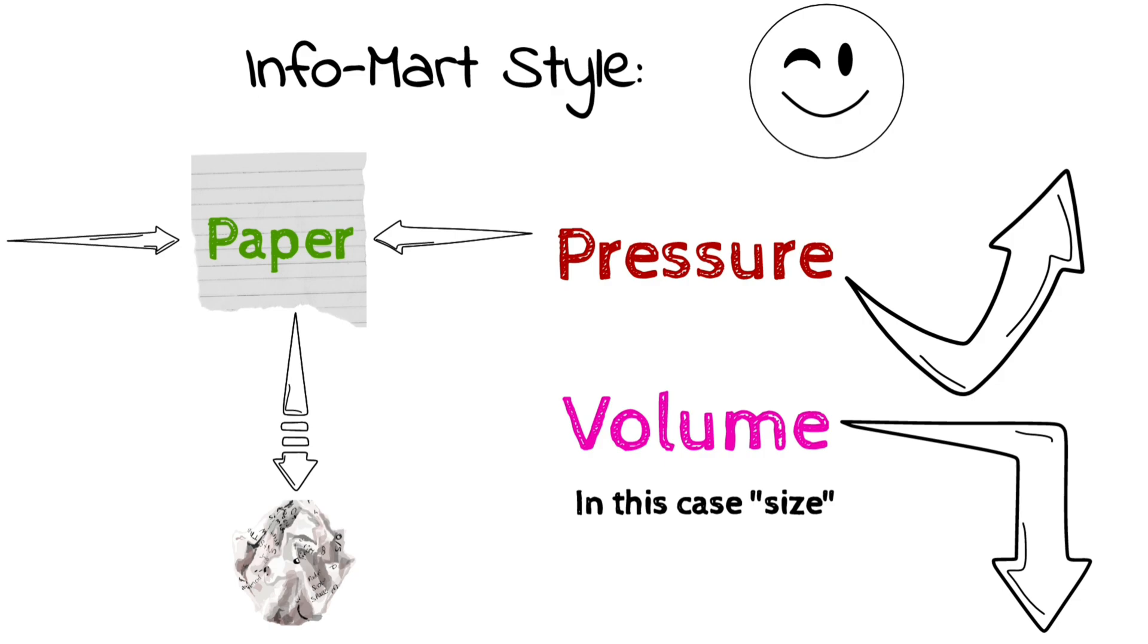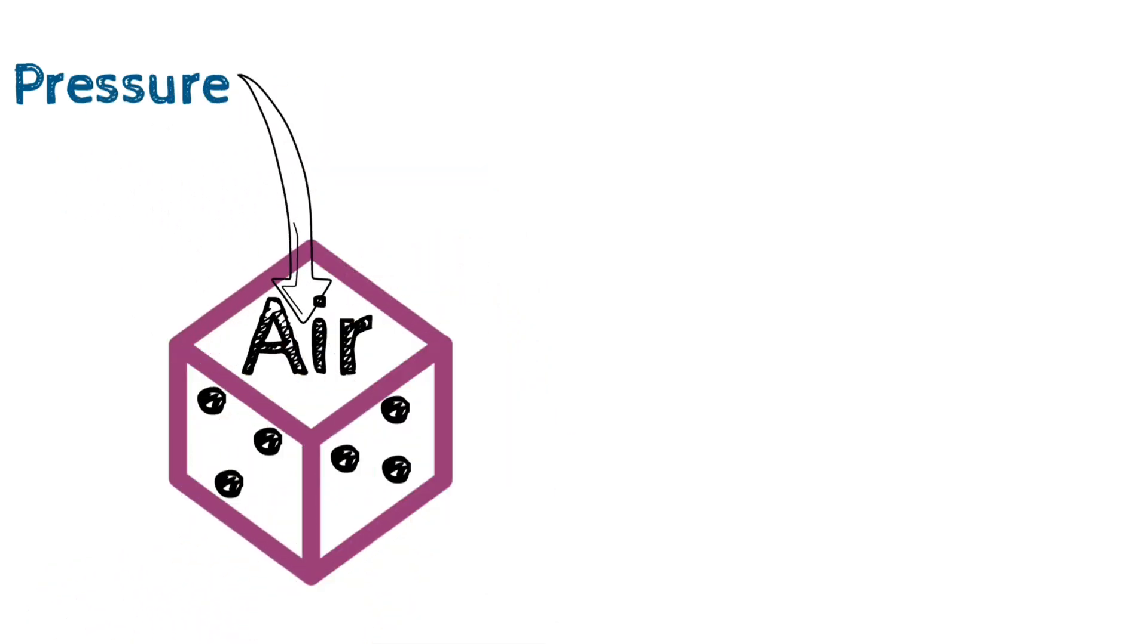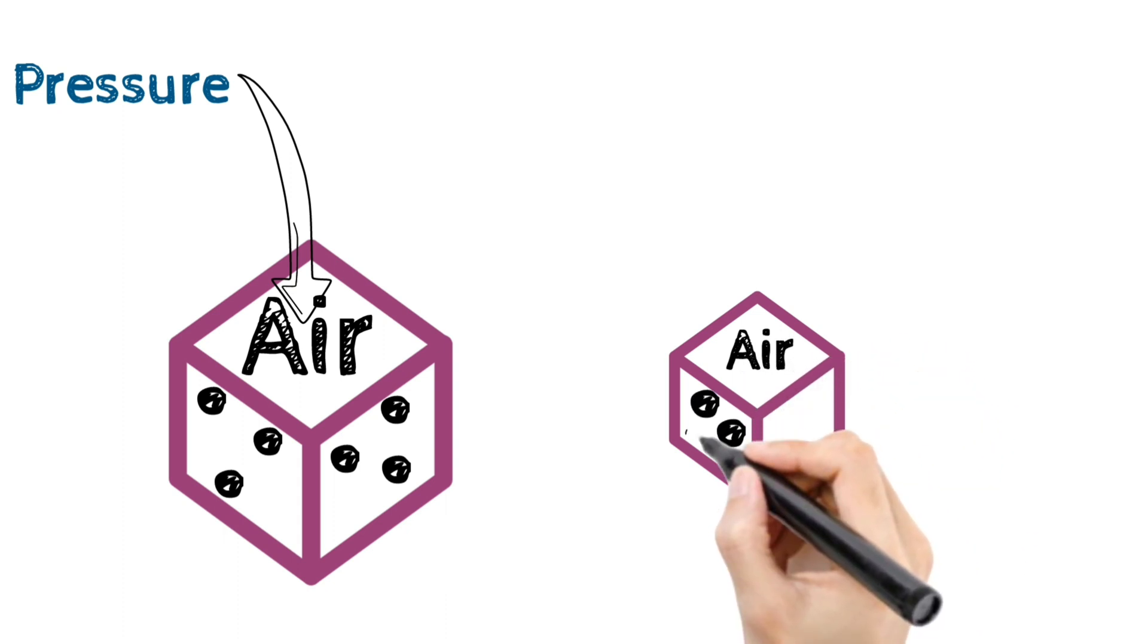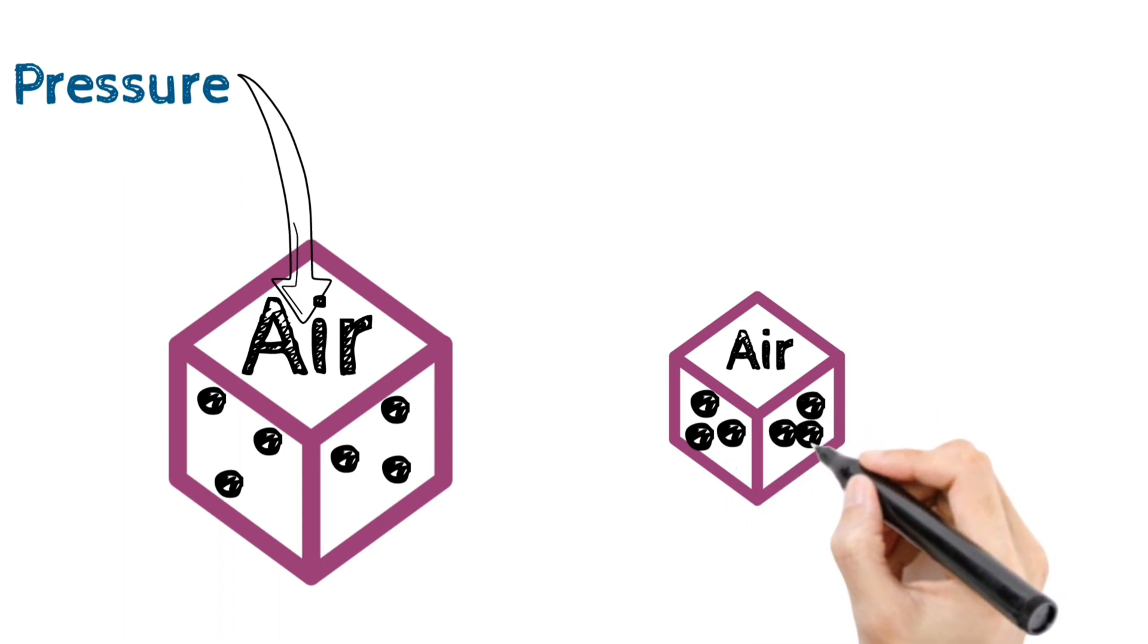Now let's take this concept and put it elsewhere. Imagine this is a box full of air. These are the air molecules present inside the box. Now let's put pressure on the box. What will happen is that the air molecules inside the box have now come closer to each other and acquire less space. And as a result, the volume has decreased.